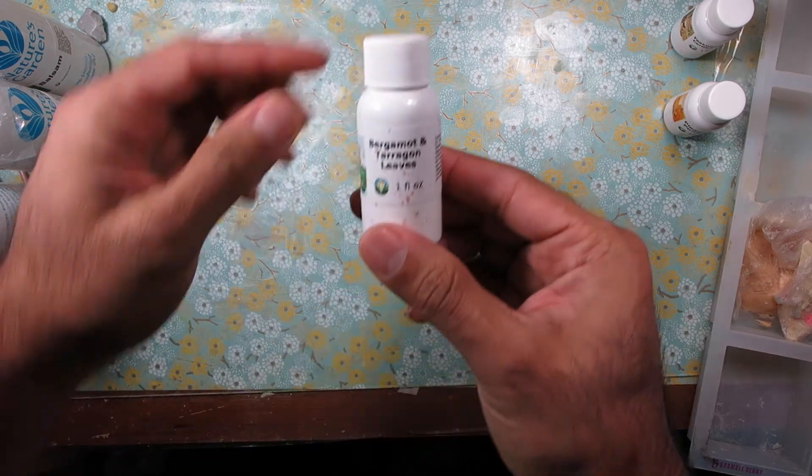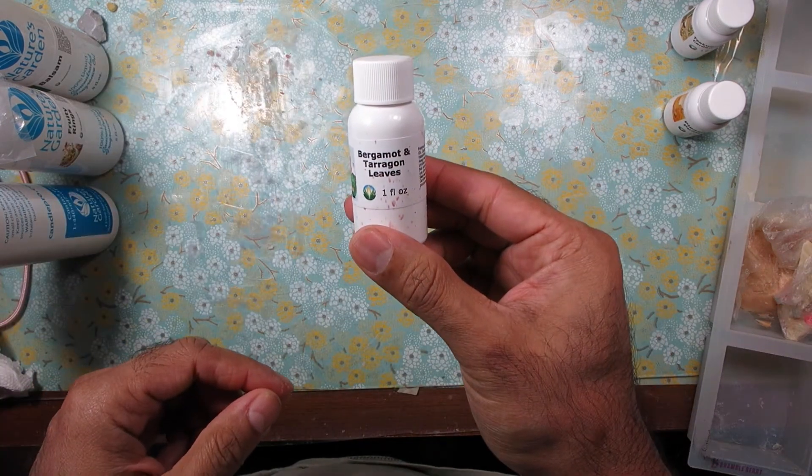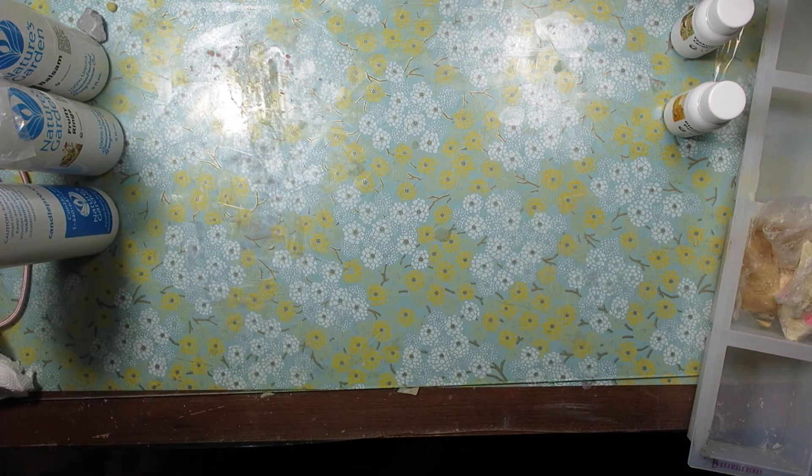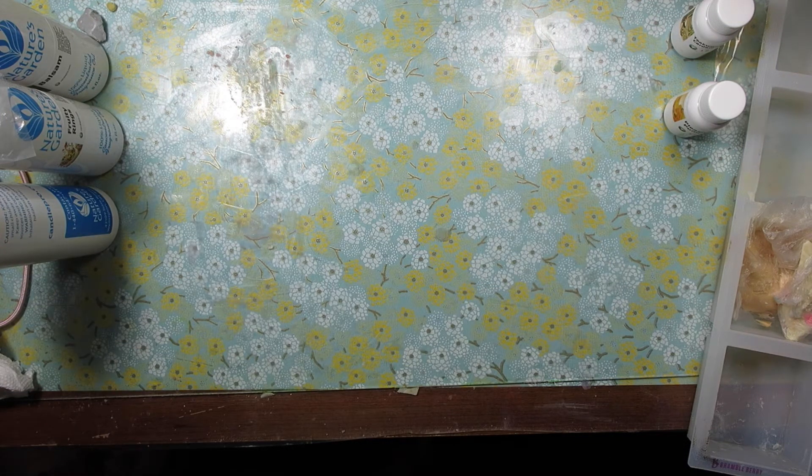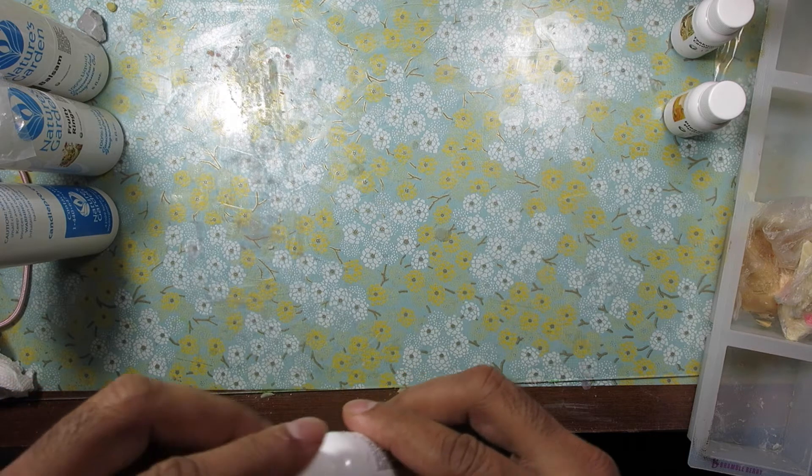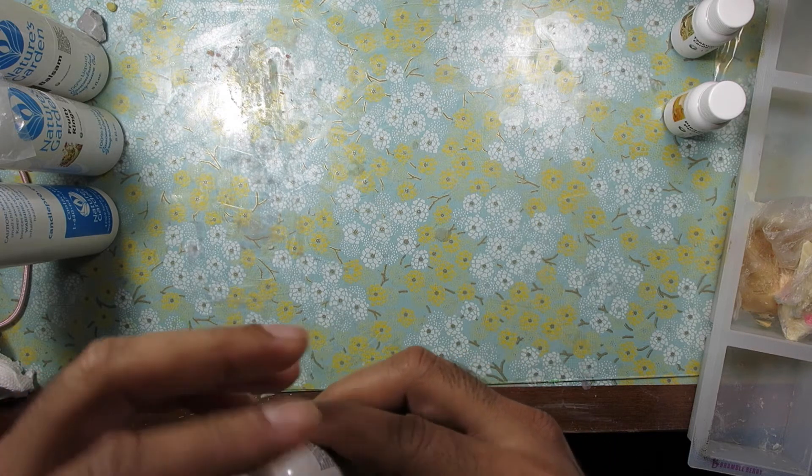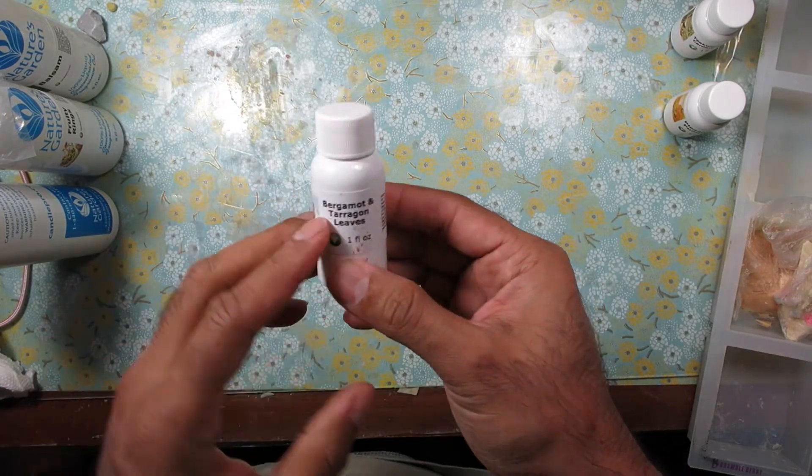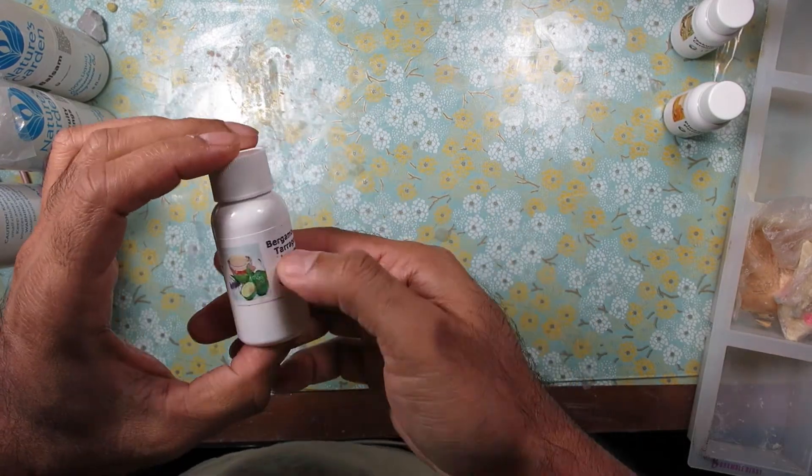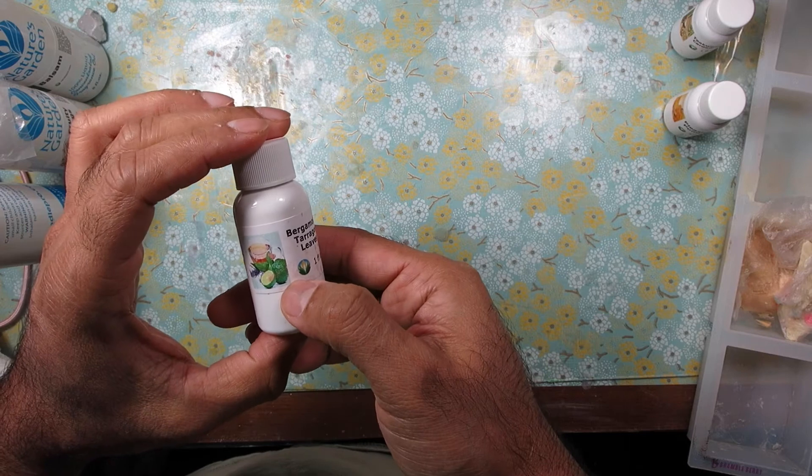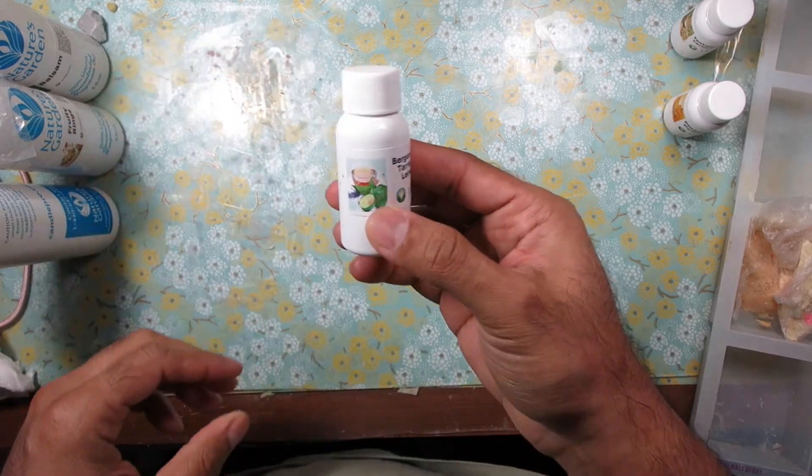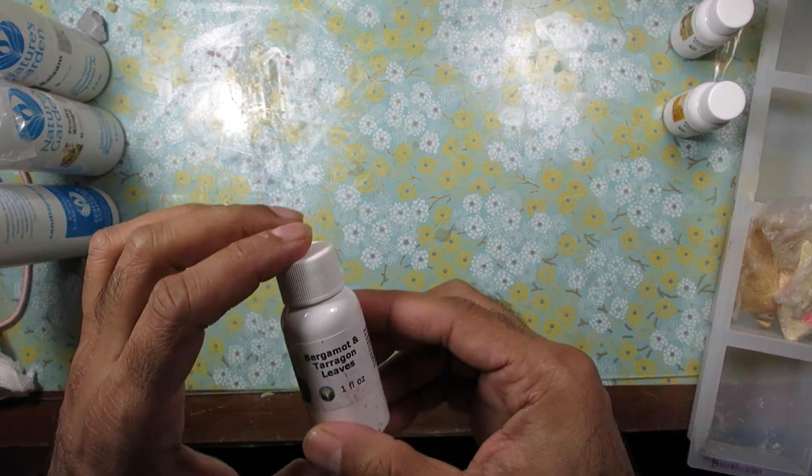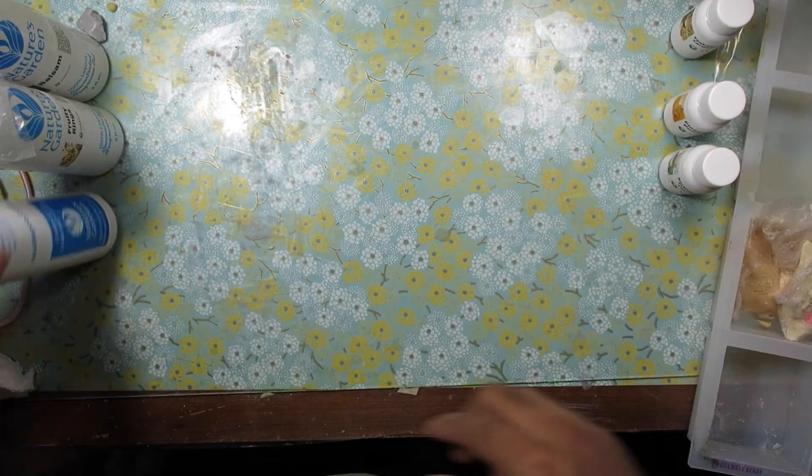Bergamot and tarragon leaves. Let's see this. This one has some kind of earthy scent. I guess it's the leaves. The bergamot and tarragon give it that. It's nice. It's also a little citrusy. It's a good one.